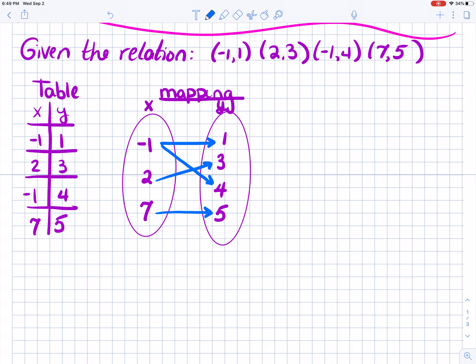Let's talk about our domain and range then. Our domain is our input: negative 1, 2, 7. Notice I didn't write negative 1 twice. I only wrote it once. Because when we write down the domain, we don't repeat numbers. And the range, the output, the Y values, are going to be 1, 3, 4, and 5.